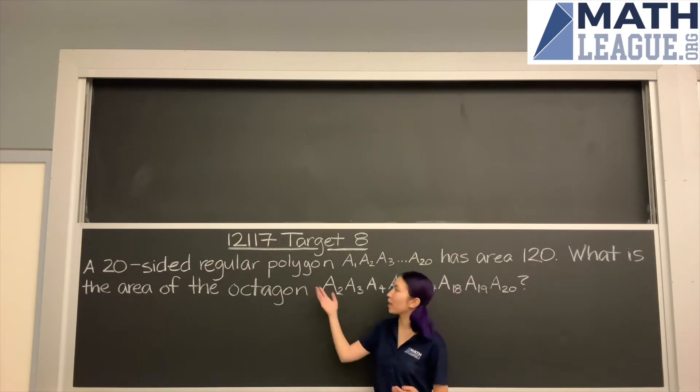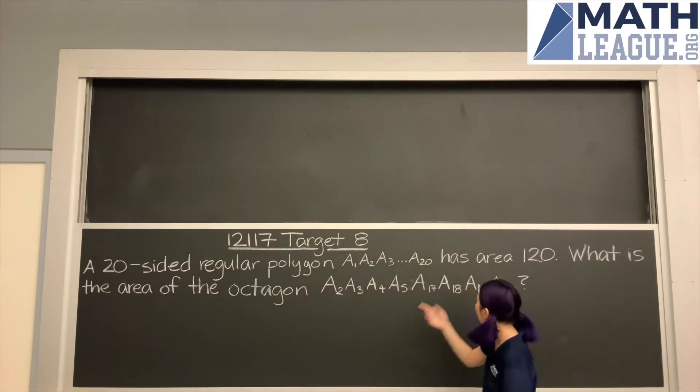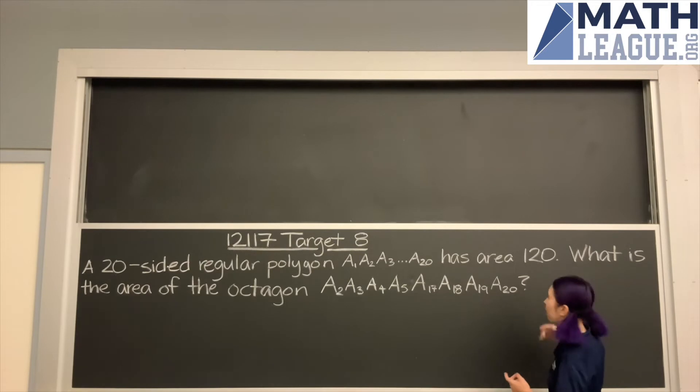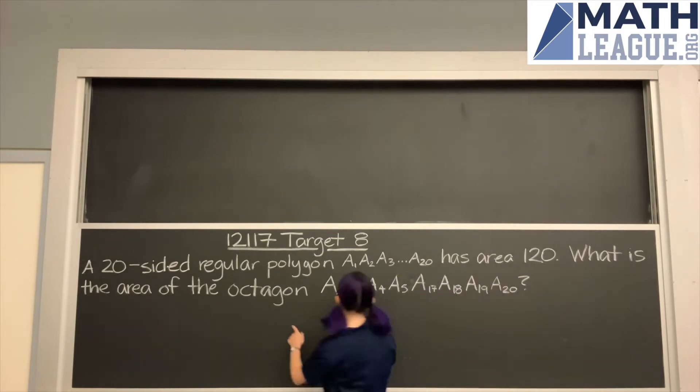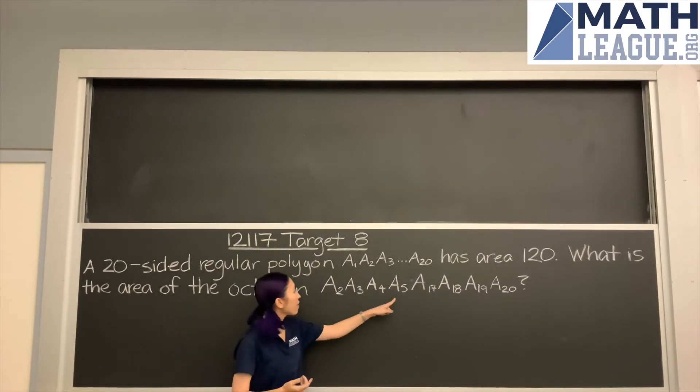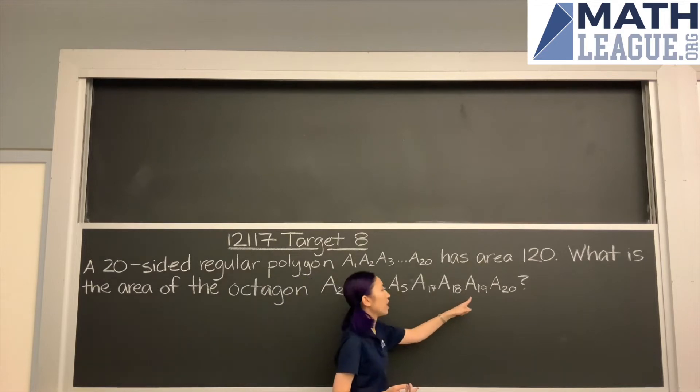A 20-sided regular polygon, A1, A2, A3, all the way up to A20, has area 120. What is the area of the octagon A2, A3, A4, A5, A17, A18, A19, A20?